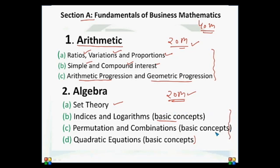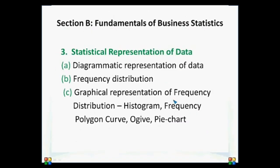Section B is 60 marks. The third topic is statistical representation of data.